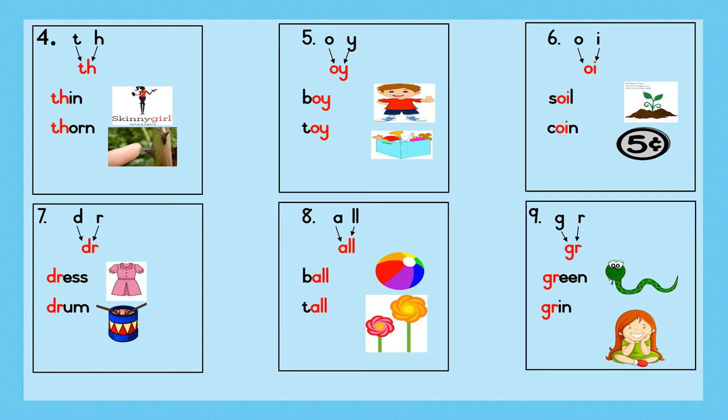Example 8. A-l-all. B-all: ball. Sentence: Pam has a colourful ball. T-all: tall. Sentence: The yellow flower is tall.